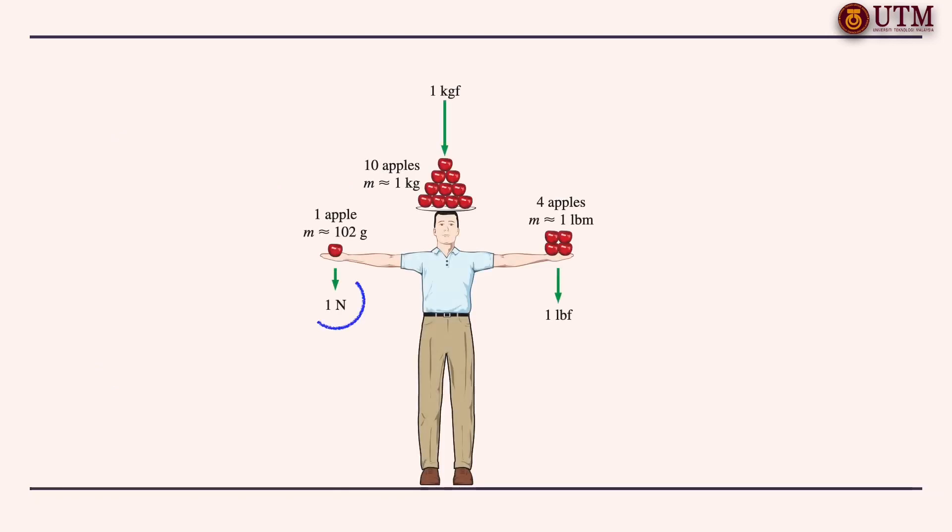A force of 1 newton is roughly equivalent to the weight of an apple of 102 grams. Whereas, a force of 1 pound force is roughly equivalent to the weight of 4 medium apples which is around 454 grams. Another force unit in common use in many European countries is the kilogram force which is the weight of 1 kilogram mass at sea level. 1 kilogram force is equal to 9.807 newton.